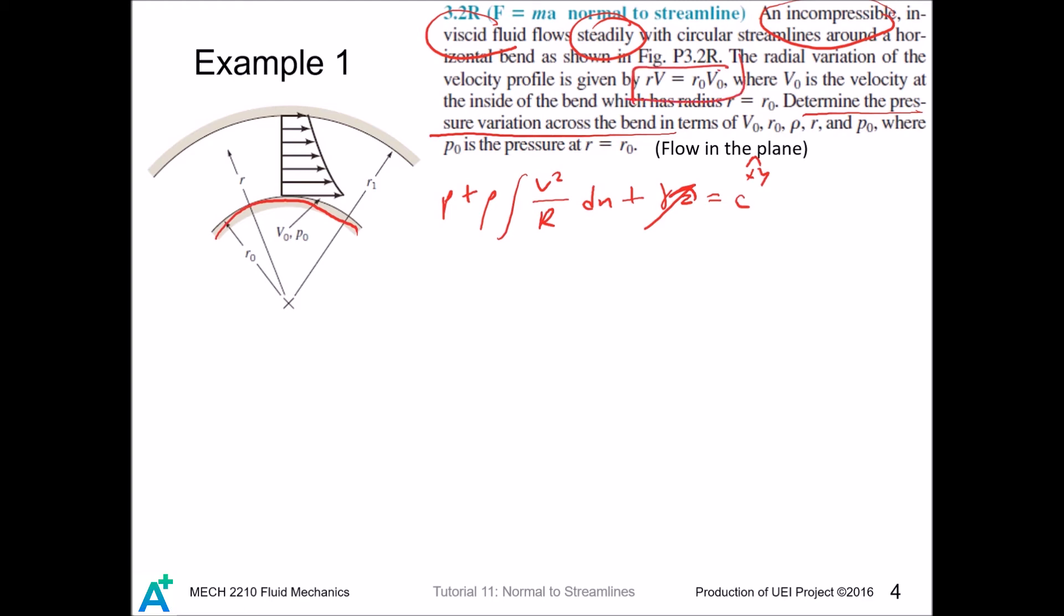Looking at here, we are provided that r times v equals r naught v naught. So we have v as a function of r equals r naught v naught divided by r. We also observe that r points radially outward, and for any location we have n points radially inward, so we have minus dn equals dr.